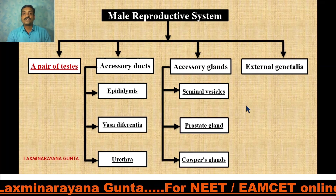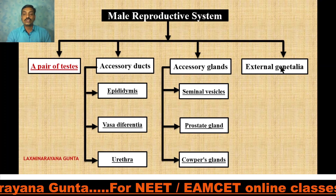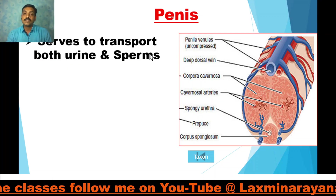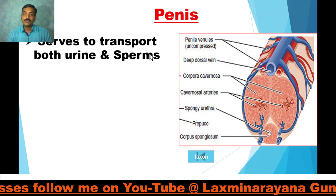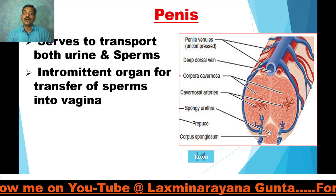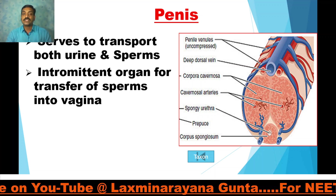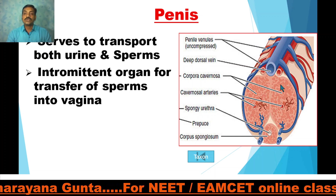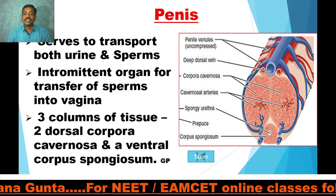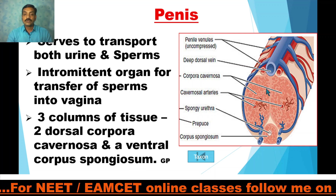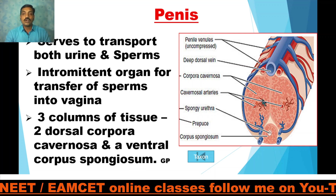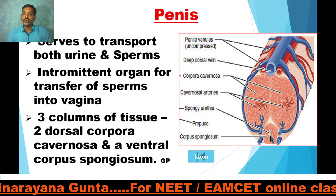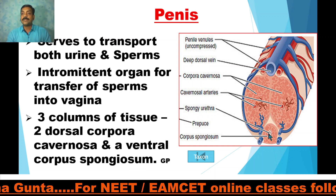Coming to the external genitalia, which includes the penis and scrotum. The penis serves to transport urine and sperms, and it is an intermittent organ for transfer. The penis shows three columns of tissue: the dorsal two columns are corpora cavernosa, and the ventral tissue is corpus spongiosum, through which the urethra passes.